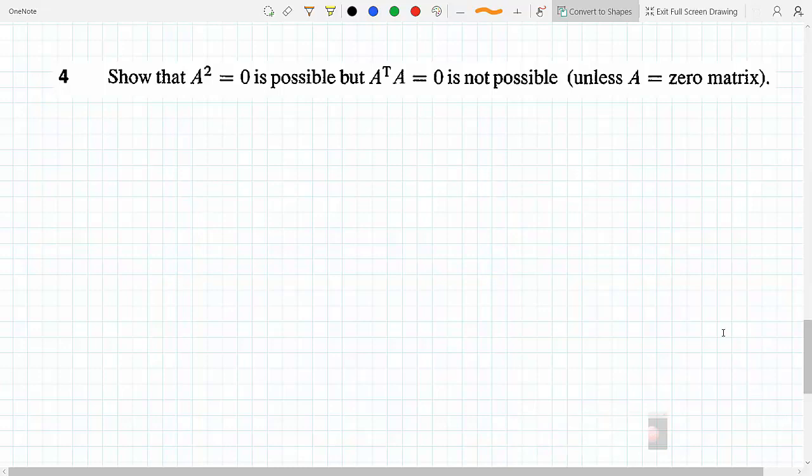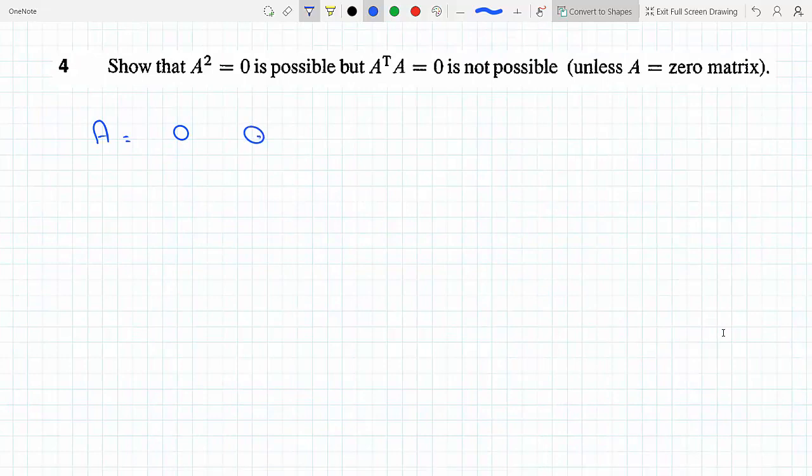Show that A squared equals zero is possible but A transpose A equals zero is not possible unless A is a zero matrix. Let's consider a specific example. Take A equal to [[0,0],[1,0]].